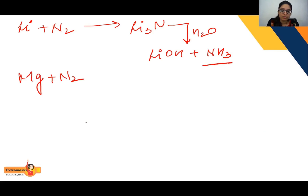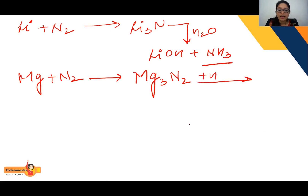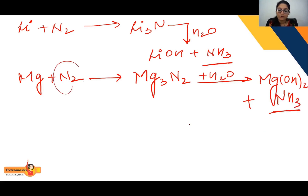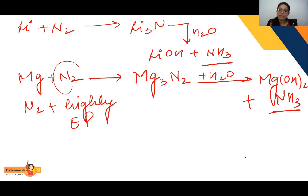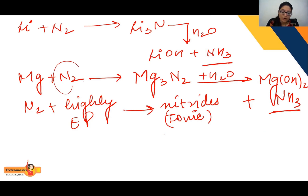Another example: magnesium when it reacts with N₂ gives magnesium nitride, Mg₃N₂. When magnesium nitride reacts with water, you get Mg(OH)₂ plus NH₃. So when nitrogen reacts with a highly electropositive element or metal, you get a nitride that is ionic in nature.